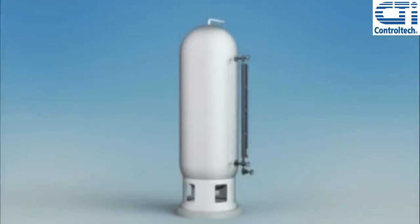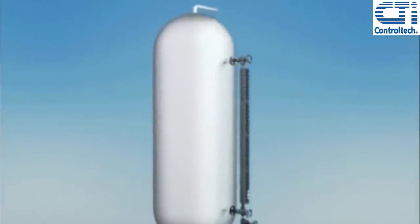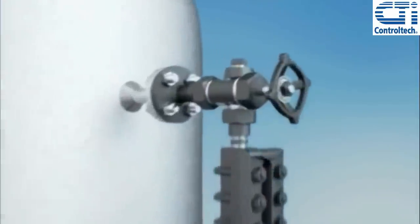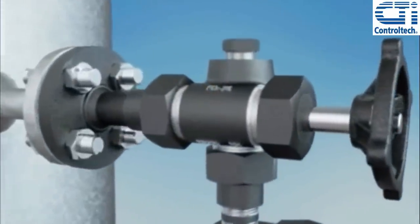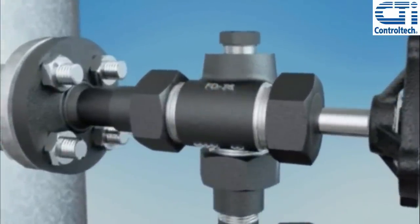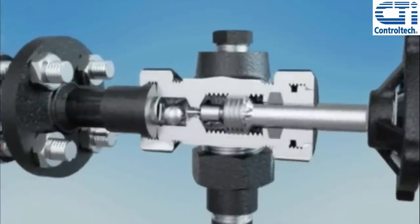This video illustrates the correct procedure for commissioning a Jurgeson glass level gauge equipped with safety ball check valves when liquid is already present in the vessel. It further illustrates how ball check valves operate and a common commissioning mistake.